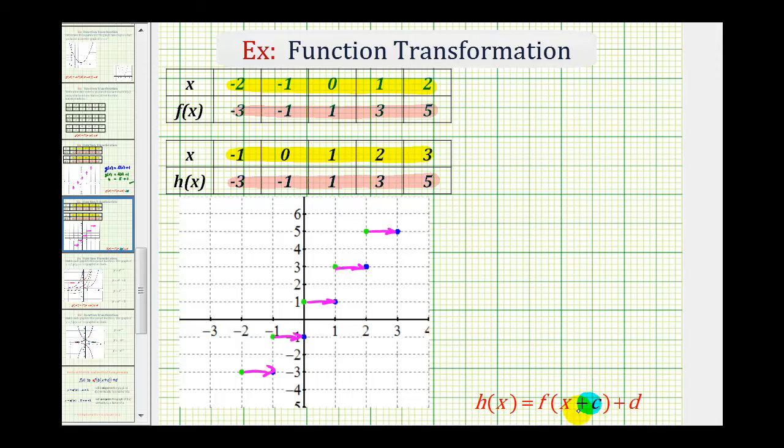But remember, the sign of c is the opposite of what you might think. Because it shifted right one unit, that means c is going to be negative one. Which means our function rule is going to be h of x equals f of the quantity x minus one.